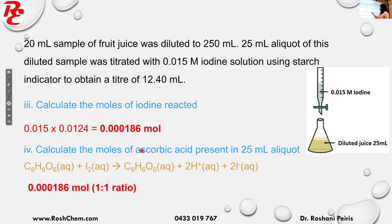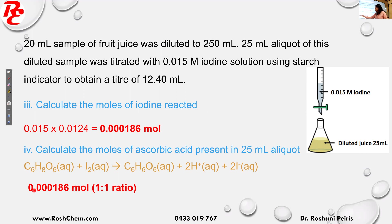Calculate the moles of ascorbic acid present in the 25 ml aliquot. It's asking how many moles of ascorbic acid (vitamin C) are present. From the equation, it's a one-to-one ratio — so if you know the moles of iodine, the moles of ascorbic acid will be the same. In this 25 ml, you will have the same number of moles as iodine, because it's a one-to-one ratio.